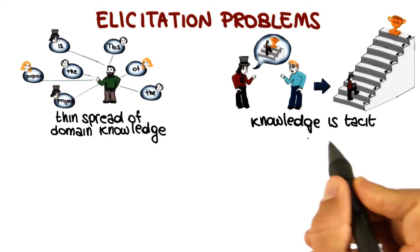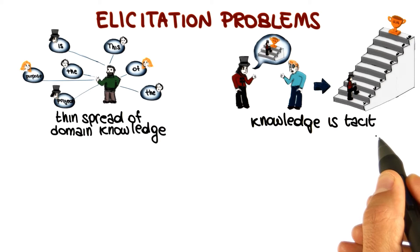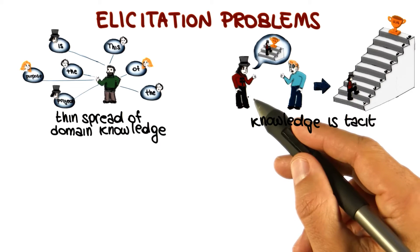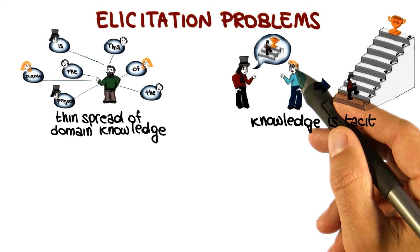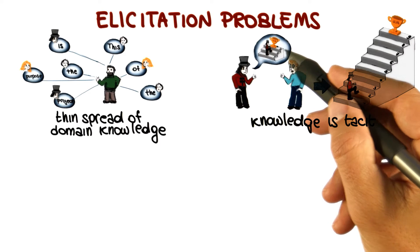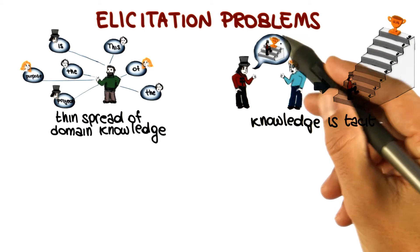A second issue is the fact that the knowledge is often tacit. What is also called the say-do problem. In the example shown here, for instance, we have a customer that is describing to the analyst the way in which he accomplishes a task. So he performs these three steps and reaches the goal.